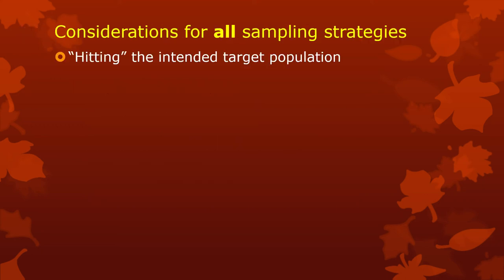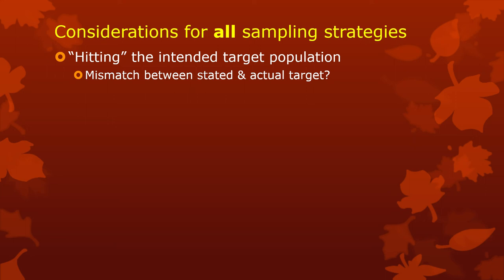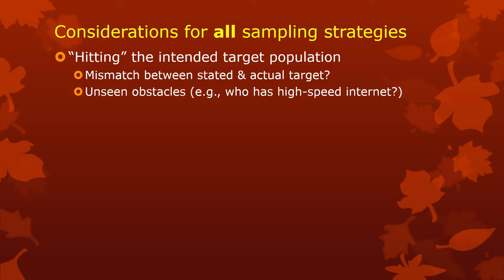For all sampling strategies, we need to consider whether we actually were likely to hit the intended target population. Sometimes we state our intended target population but what we do doesn't match that. A classic example is the Dewey beats Truman thing, where the newspaper used a telephone poll thinking their target population was all people who might vote — but in fact it was just people who might vote who had telephones. Back then only wealthy people could afford telephones, and wealthy people were more likely to be Republican. So they got the opinions of Republicans more than just everyone's opinions. If your actual sampling method makes your real target population different from your intended one, you've got a problem. There can also be unseen obstacles — like if your survey involves watching a video, people without high-speed internet are excluded in ways you didn't plan on.